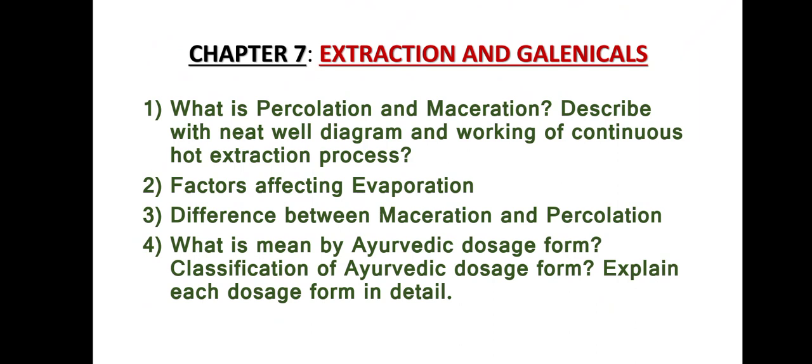Chapter seven: Extraction and Galenicals. There are four important questions. Question one: What is percolation and maceration? Describe with a neat diagram and working of the continuous hot extraction process. Question two: Factors affecting evaporation. Question three: Difference between maceration and percolation. Question four: What is meant by Ayurvedic dosage form? Classify and explain each dosage form in detail.